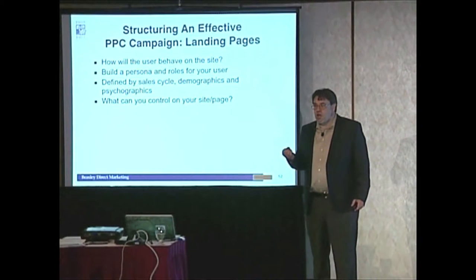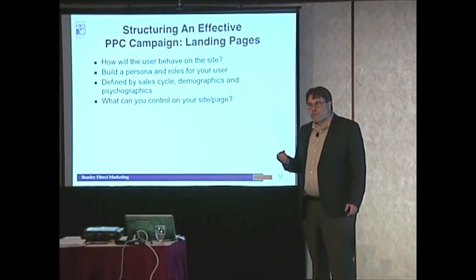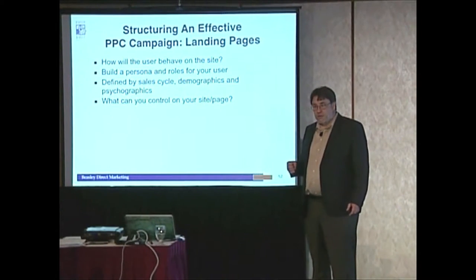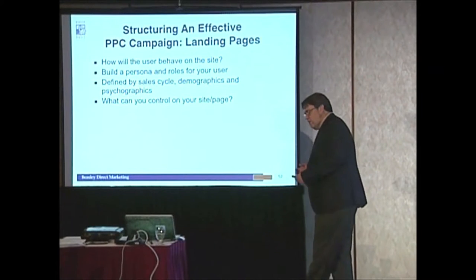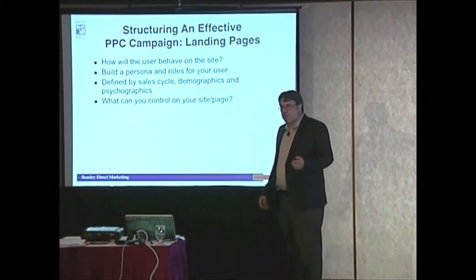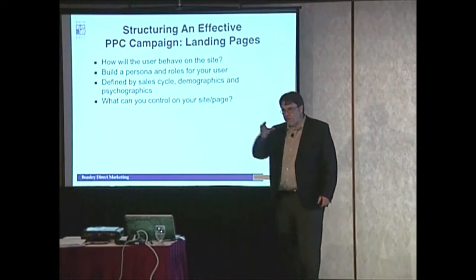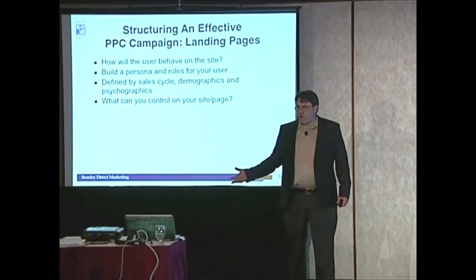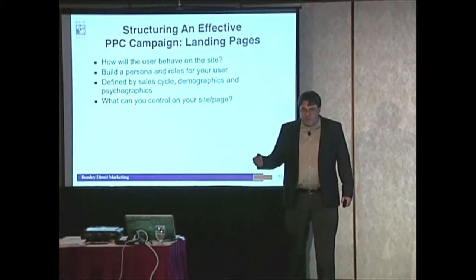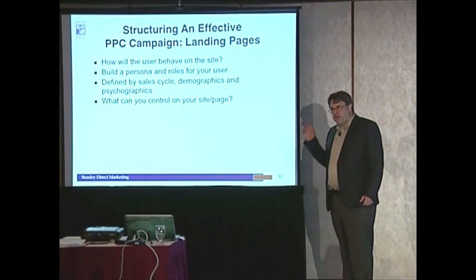Generally, you don't want more than three or four personas, because then you start getting too segmented — it'll be Susan versus Susanna — and the return on your effort starts to diminish. Three or four personas: try to match them to whether they're buyers or influencers, and where they are in the buying cycle. Bill's going to be early in the cycle as a suggester; Susan's going to be the one making the decision. Hit each persona's hot buttons at the right time with the right ads and the right pages.